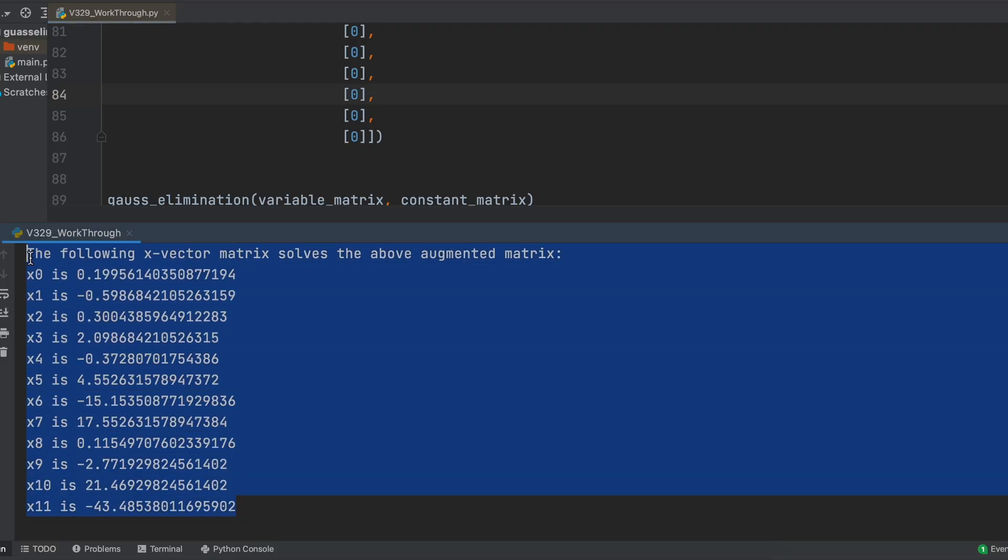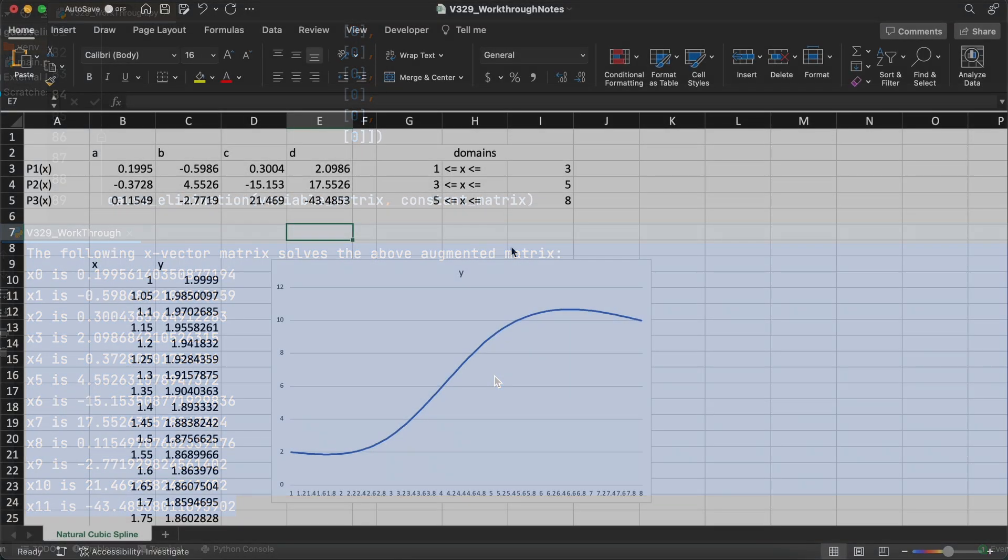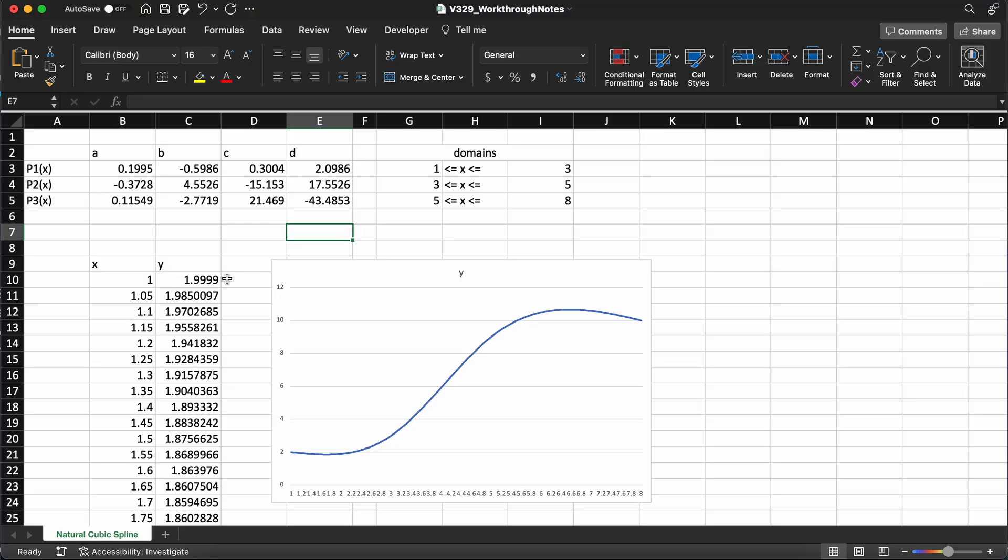Each of these x values represents a coefficient of our 3 interpolating polynomials. x0 is a1, x1 is b1, x2 is c1, x3 is d1, and so on. To visualize these polynomials, I am just going to plot them rather crudely inside of Microsoft Excel, keeping in mind our domains that we have talked about previously, as you can see this results in the following very nice smooth function.